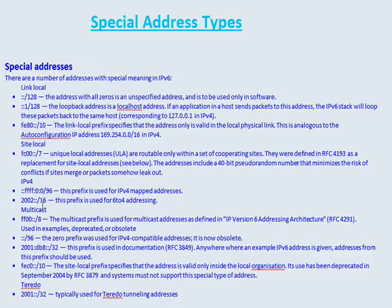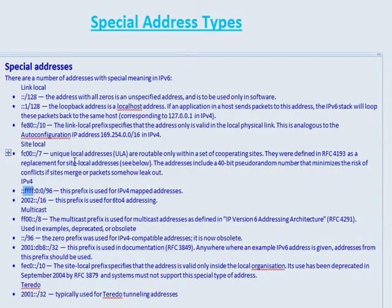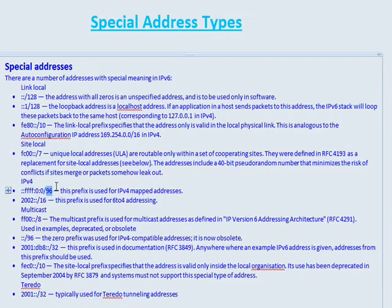Now let's talk about the ::ffff address. These addresses start with four F's, and if you see this you know it's a special type of IPv6 address because it has an IPv4 address embedded in it. IPv4 addresses are 32 bits long and IPv6 addresses are 128 bits long, so the prefix here is 96 bits — and 96 plus the embedded 32 bits gives you 128. The last 32 bits are the host bits.